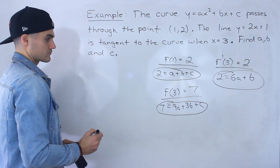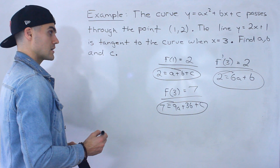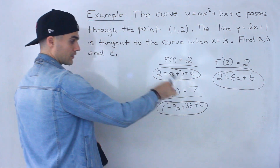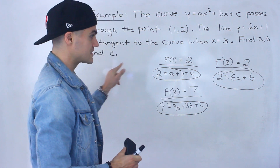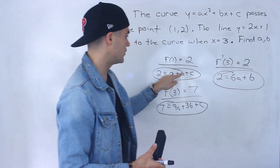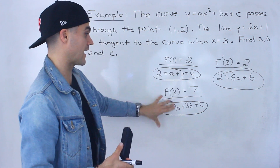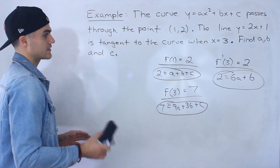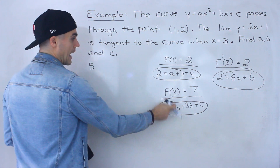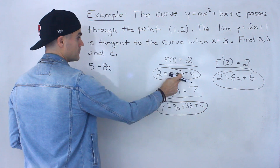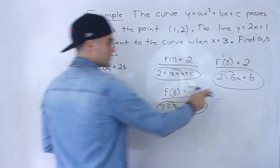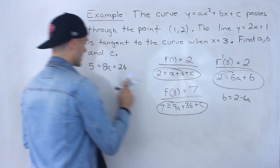To solve the system, let's subtract equation one from equation two to eliminate c. That gives us 8a plus 2b equals 5. We also have the third equation: 6a plus b equals 2, so we can isolate b as b equals 2 minus 6a and substitute it into the subtracted equation.